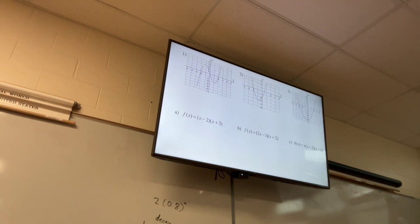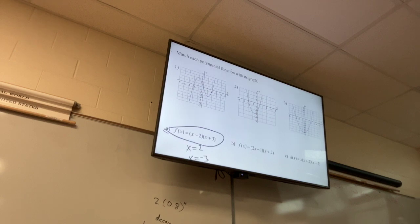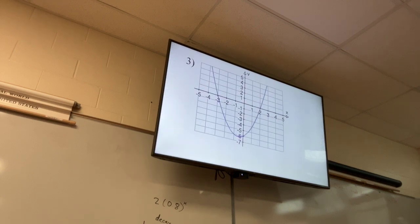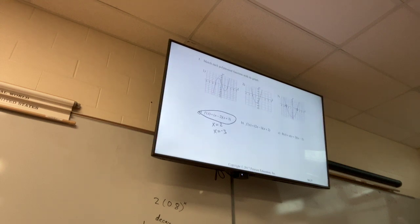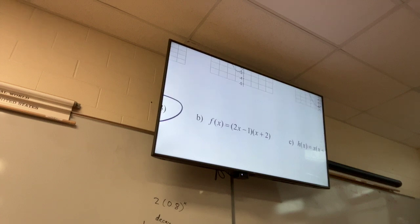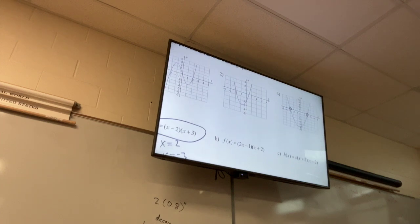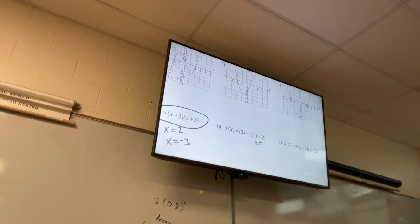For the graph matching problem: find the zeros. The zeros of the first function are x equals 2 and x equals negative 3, which matches the third graph — negative 3 and 2. That's graph 3.